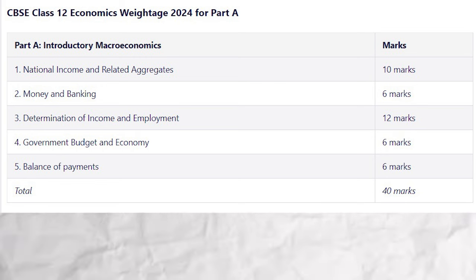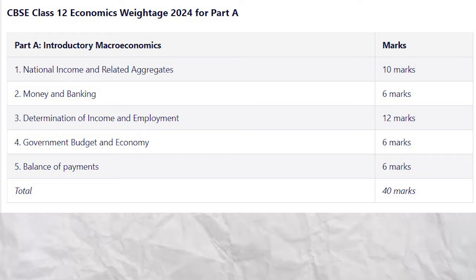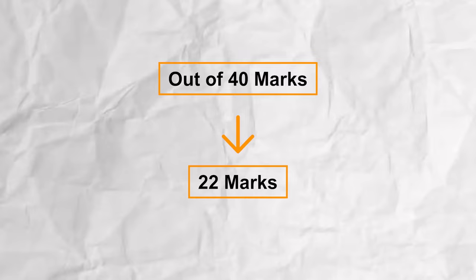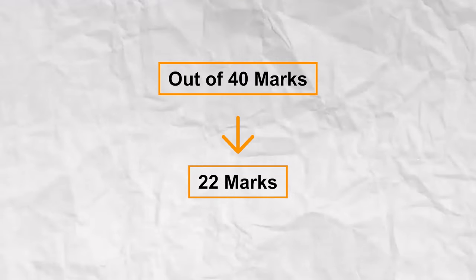50% of your marks are from the macroeconomic module. If we focus here, there are two major chapters with the most allocated marks: one is national income and one is determination of income and employment. These two chapters are very important and they have numericals in your papers. If you have read and practiced them properly, out of 40, you will be well prepared for 22 marks. These two are not very difficult chapters and you will find all the videos on my channel.